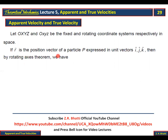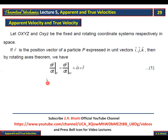If R is the position vector of the particle P expressed in unit vectors I, J, K, then by the rotating axis theorem we have: DR/DT (fixed) is equal to DR/DT (moving) plus omega cross R, where omega is the angular velocity of the rotating coordinate system.